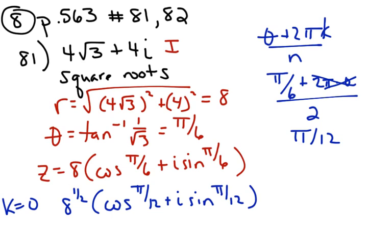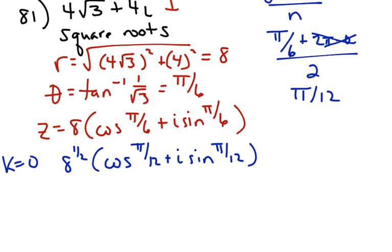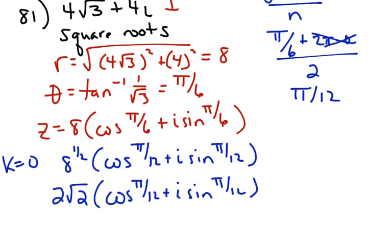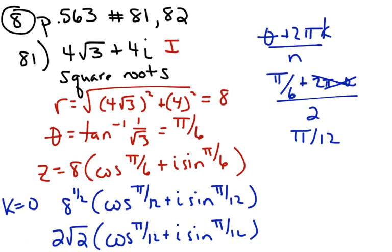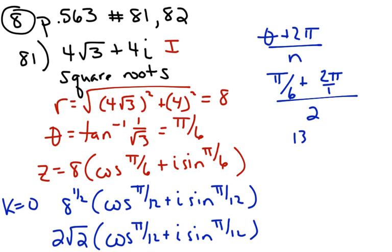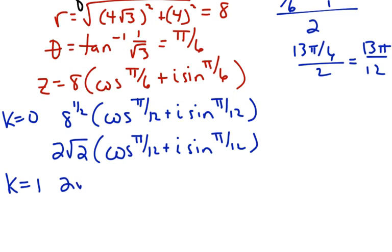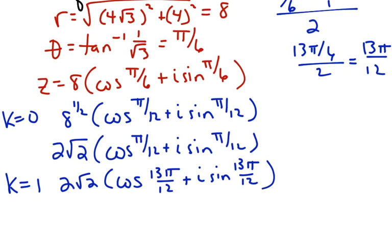Since pi/12 is not a special angle, we leave this as 2√2 cosine(pi/12) plus i sine(pi/12). Now for k=1, we go back and change to 2pi: pi/6 plus 2pi is 13pi/6, and 13pi/6 divided by 2 is 13pi/12. So the second root is 2√2 cosine(13pi/12) plus i sine(13pi/12). And that's all we need, because we only needed the square roots.